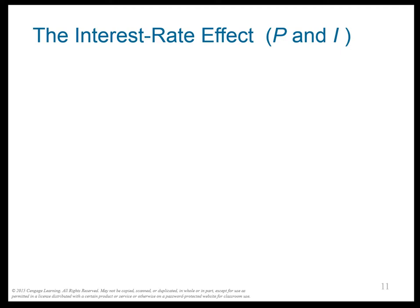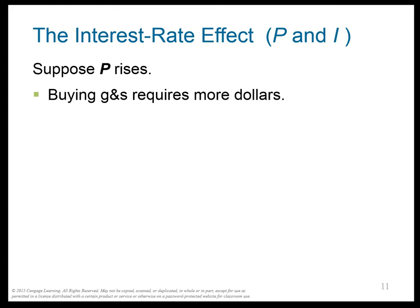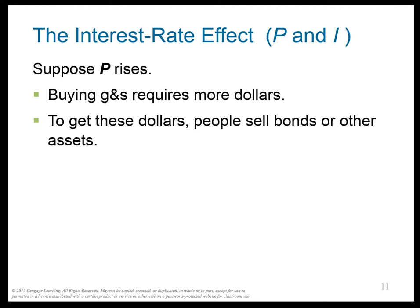What happens to investment when P changes? If P rises, it requires more dollars, so people save less — also known as selling bonds. In the market for loanable funds, people take their money out, which drives up the interest rates, which drives down investment, because investment depends negatively on interest rates.